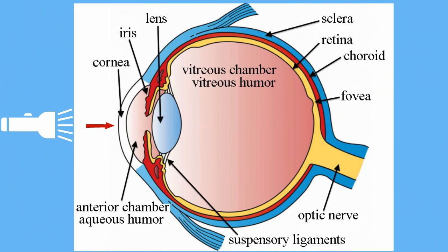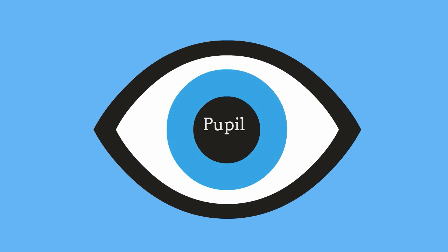When rays of light first strike your eyes, they pass through a structure known as the cornea. It is a clear tissue that covers the front of the eyes. As light passes through the cornea, it passes through a fluid-filled chamber and then reaches the pupil. The pupil is an opening through which light enters the eye. You may have noticed that in bright light the pupil is small, and in dark light your pupil is large.